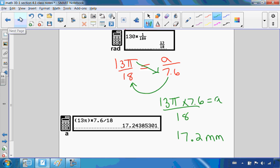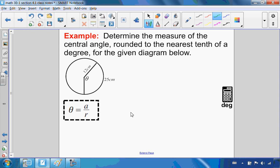Let's try another one. Determine the measure of the central angle rounded to the nearest tenth of a degree for the given diagram below. Looking at my formula, theta equals arc length over radius. I want to take that and change it to degrees. Right now, this is in radians.